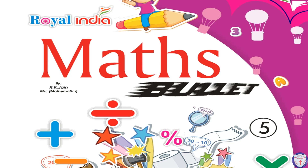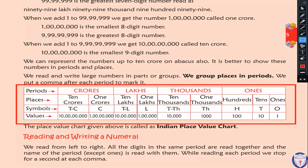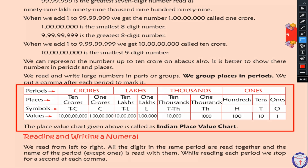Good morning, dear students of class 5. Today we are going to discuss another topic. In our previous class we already discussed the Indian place value system. In the Indian place value system, there is ones place, tens place, and hundreds place — all three places come in the ones period.